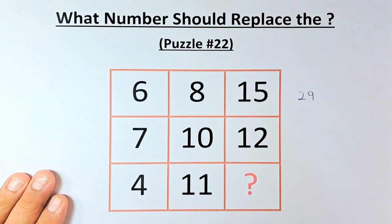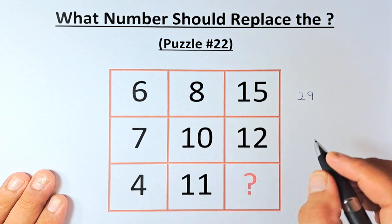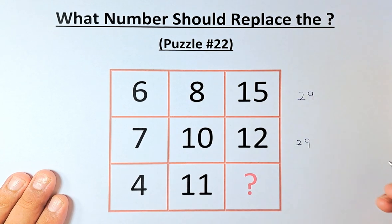Similarly, if you have 7, 10, and 12, the total - 7 and 10 is 17, 17 plus 12 - is also going to be 29.